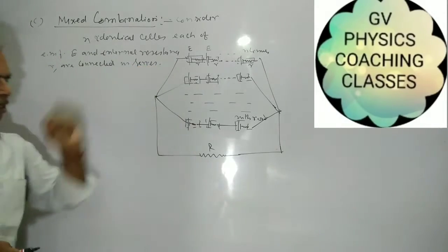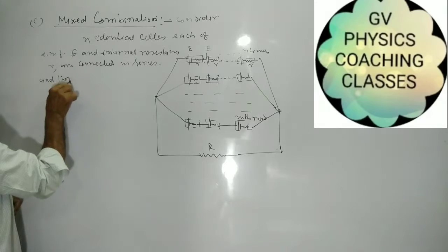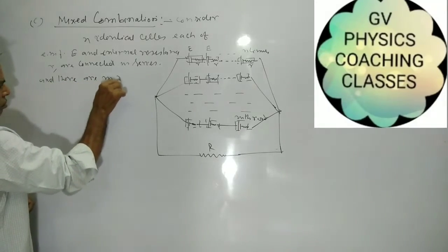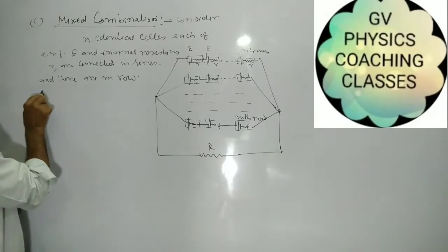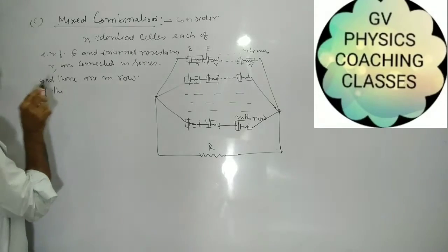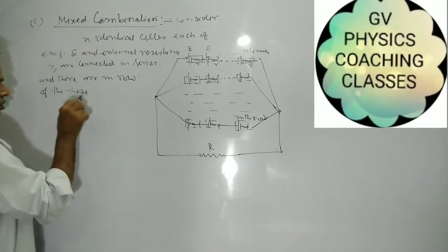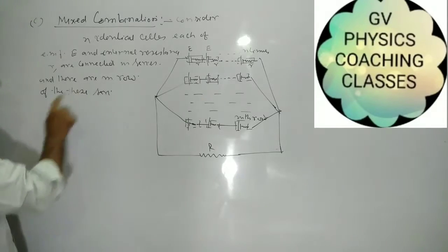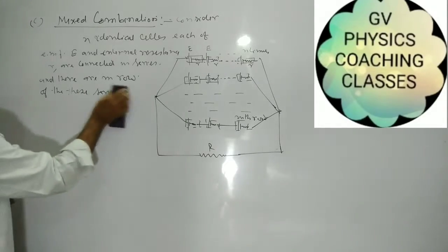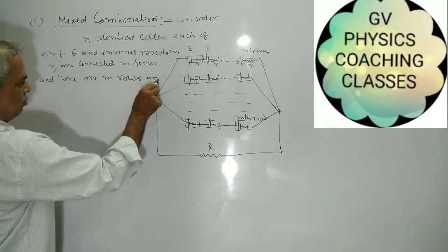N identical cells with EMF E and internal resistance r are connected in series to form one row, and there are M rows of these cells. The M rows are connected in parallel.